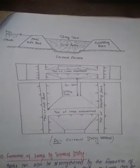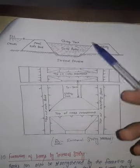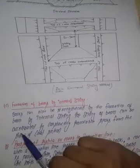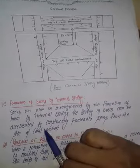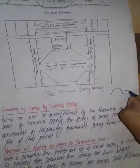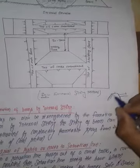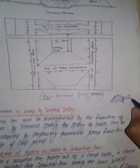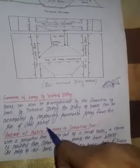Another method to increase the strength of the canal bank is the formation of berms by internal silting. Banks can also be strengthened by forming a berm using the internal silting method. The berm refers to the horizontal distance portion of the canal embankment. The silting of the berm can be accelerated by constructing permeable spouts from the side of the canal section, similar to the external silting method.